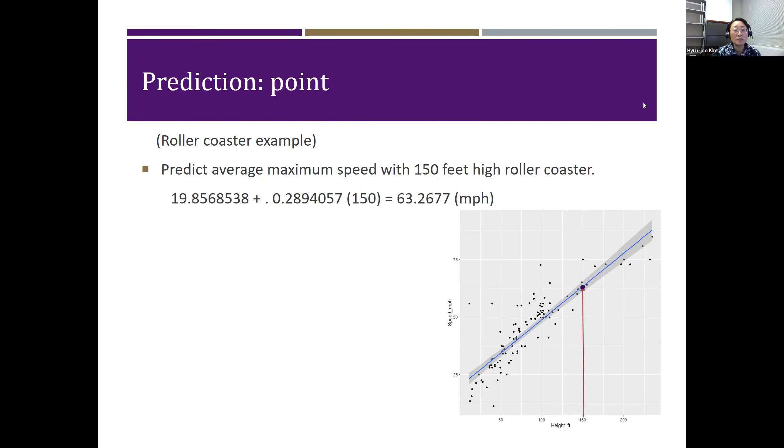Suppose we want to estimate or predict an average maximum speed with 150 feet high roller coaster. The point estimate of the maximum speed can be calculated by plugging 150 in x and solving the equation for y hat, which is 63.2677 mph.